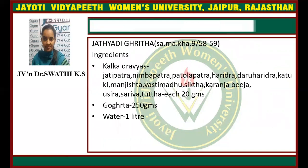Next is Tathyadi Ghrita, referenced from Sharangadhara Madhyama Khanda. Kalka Dravyas include: Choti Patra, Nimba Patra, Patola Patra, Haridra, Daru Haridra, Katuki, Manjishtha, Ishtimadu, Siktha, Dharanjiva, Ushira, Sariva, and Tuttha — each 20 grams. Go-Ghrita 250 grams and water 1 liter. The method of preparation follows the general method, and it is indicated in Prana-related conditions.